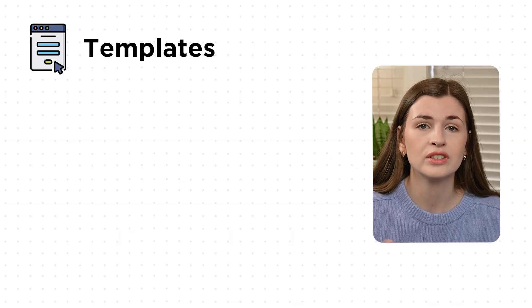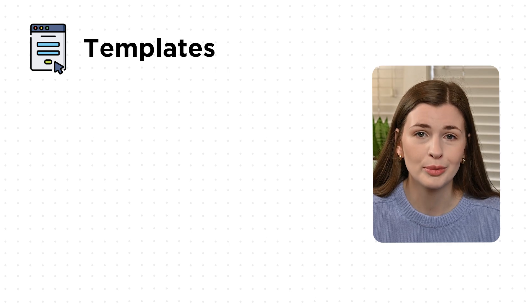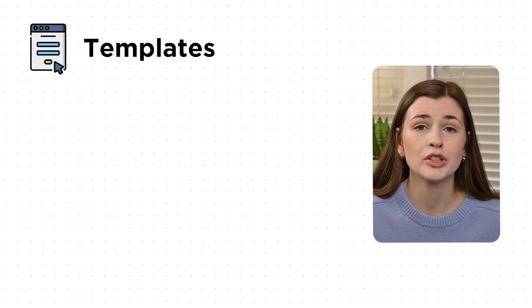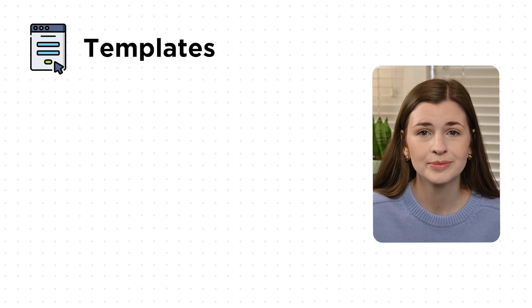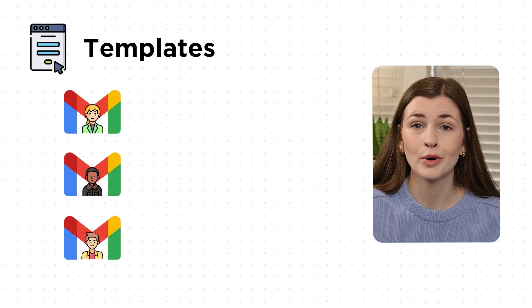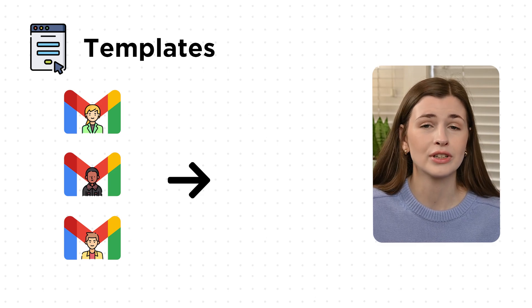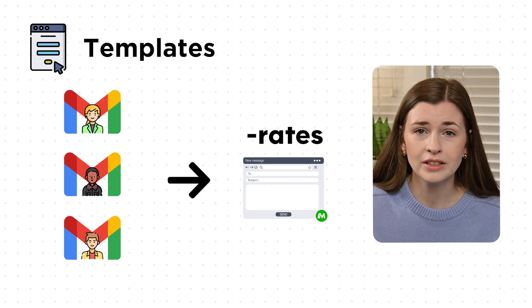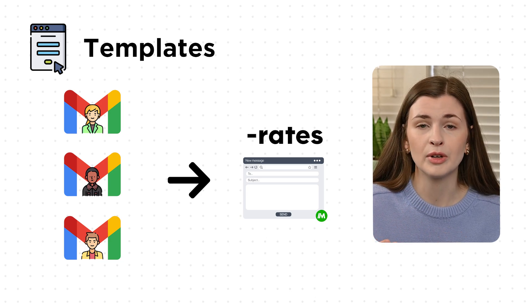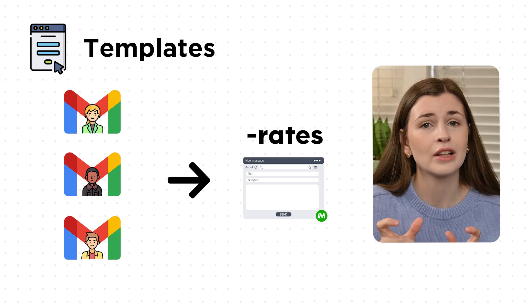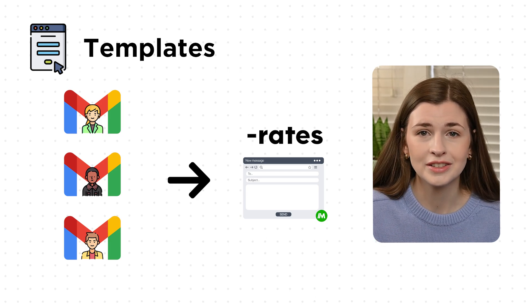Templates is another feature Magical has that actually saves you time when you send repetitive messages. For example, let's say you own a business and you're constantly being asked what your rates are. Instead of writing that email over and over again, you can set up a template called 'rates' and give it a little code name like dash-rates. Then you type that code word in your email and it will auto-populate your rates for you — you only write them out once.